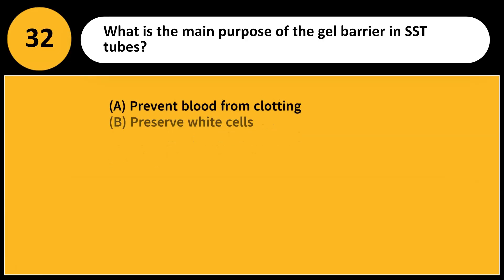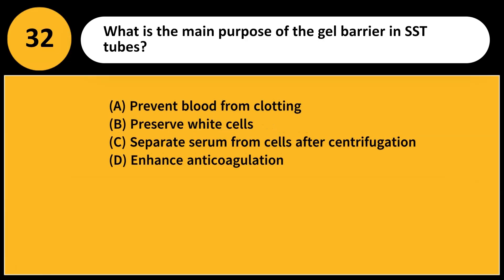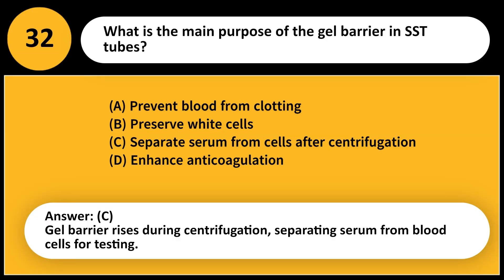What is the main purpose of the gel barrier in SST tubes? A. Prevent blood from clotting. B. Preserve white cells. C. Separate serum from cells after centrifugation. D. Enhance anticoagulation. Answer: C. Gel barrier rises during centrifugation, separating serum from blood cells for testing.